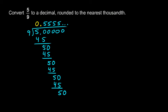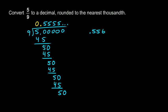We're told to round to the nearest thousandth, which is the third decimal place. To round to the third decimal place, we look at the next digit after that, and it is 5 or more, so we round up. This digit needs to be rounded up to a 6, so the answer is .556.